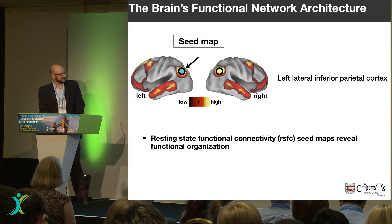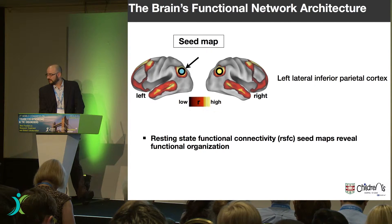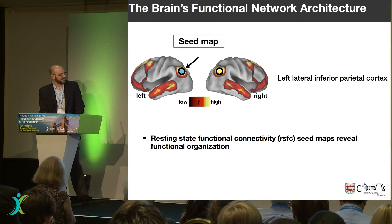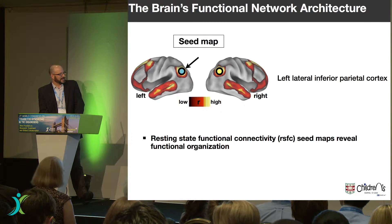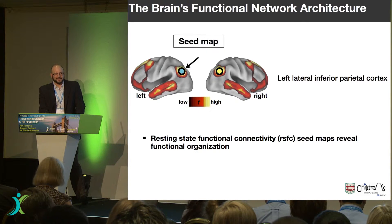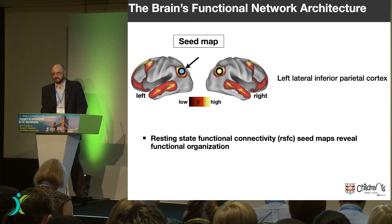You can do very interesting things with this signal. For example, we take that same seed location and ask the question: where else in the brain do we see a high correlation with that resting state signal? In addition to the homotopic region, there's a set of other regions displayed on the lateral surface of the hemispheres. Aficionados will recognize this as the lateral aspect of the default mode network — a network implicated in interoception, self-monitoring, et cetera. It's a set of regions that decrease their activity when one goes into task mode.